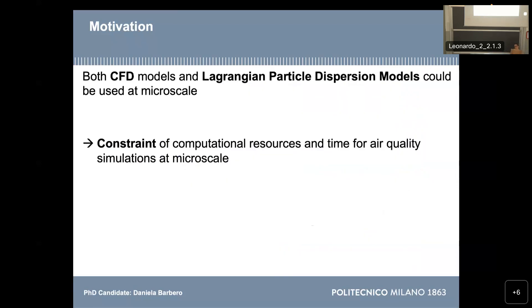At microscale, we can use two types of models: the computational fluid dynamics models and the Lagrangian particle dispersion models at microscale. Both these types of models request a lot of computational resources, and the simulations done with both types are long. I will give you an overview of the Lagrangian particle dispersion model, and then I will explain why I choose this type of model and not the computational fluid dynamics models, even if these types of models are in general more accurate from the point of view of the physics implemented.